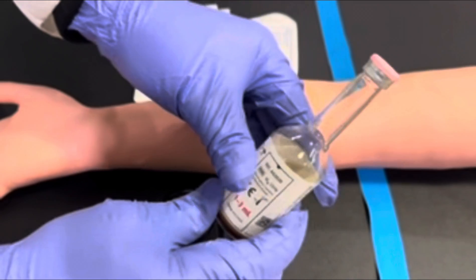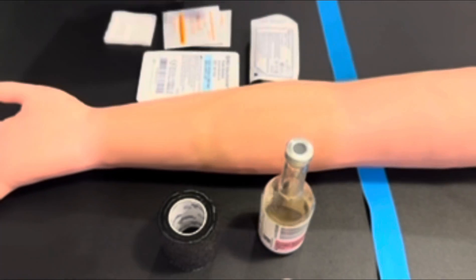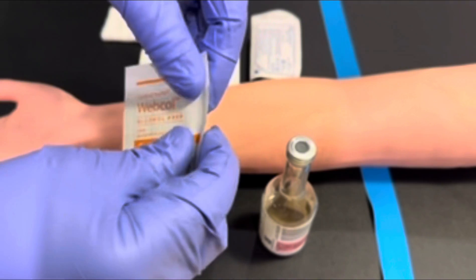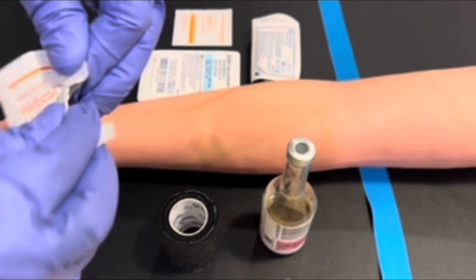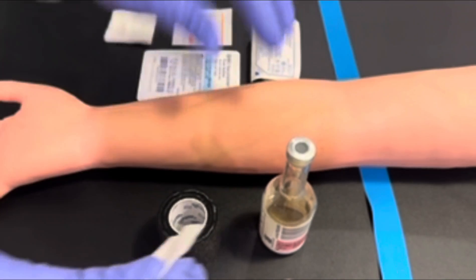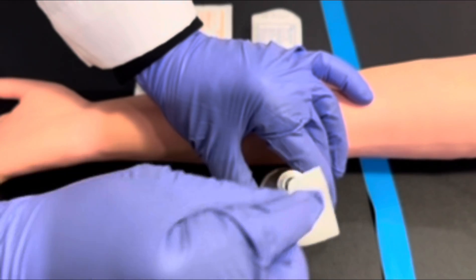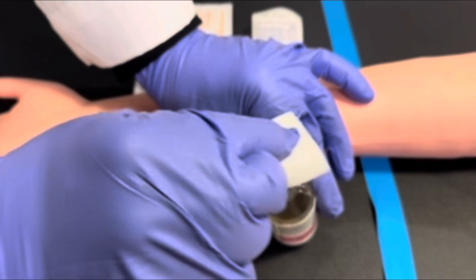With your blood culture bottle, you will take the cap off and clean the top of the blood culture bottle with 70% alcohol for 20 seconds using concentric circles.